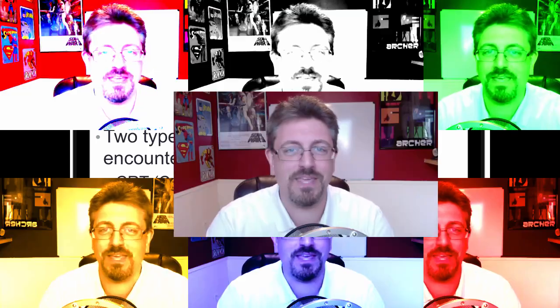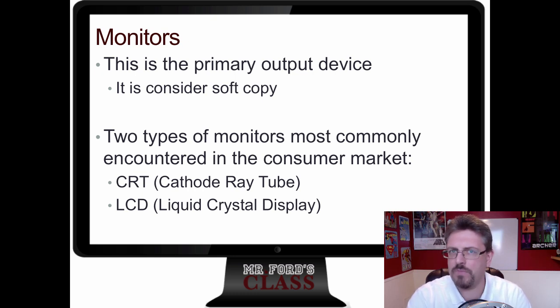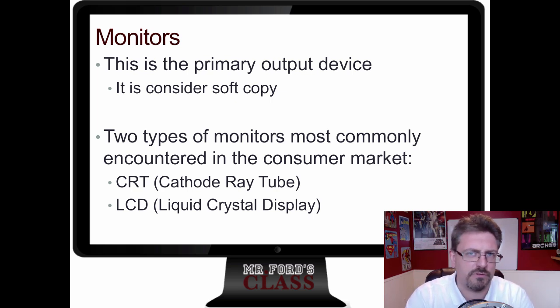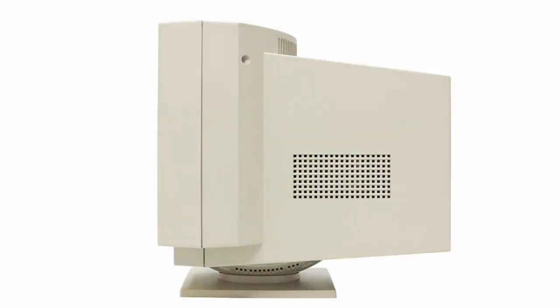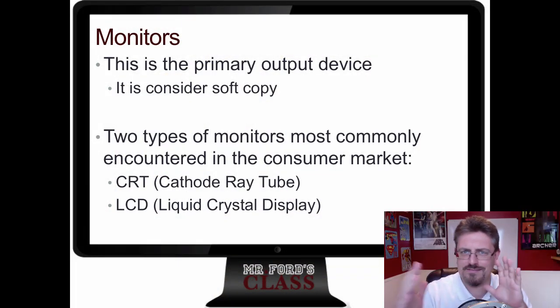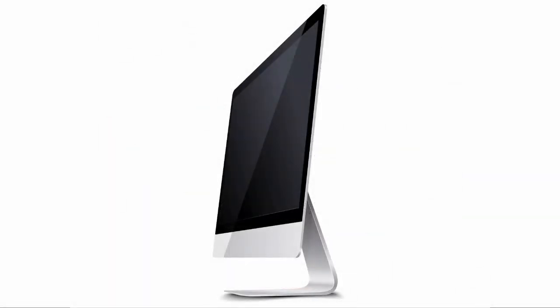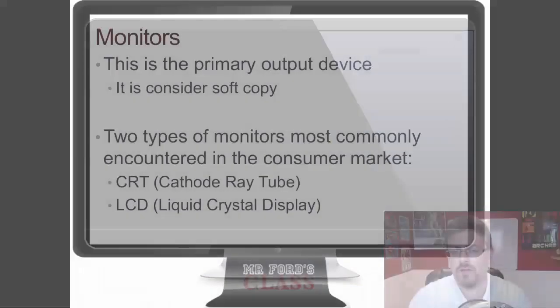Moving on to monitors — if you're looking at me, then you're seeing me through a monitor. Monitors are your primary output devices. They produce something called soft copy. There are two technologies commonly used for monitors. The older technology is the CRT, the cathode ray tube — the old-fashioned monitors with the big depth to them. The newer ones are LCDs, liquid crystal display monitors, which is what you'll find on the shelves today.